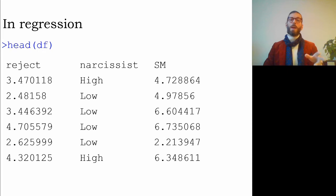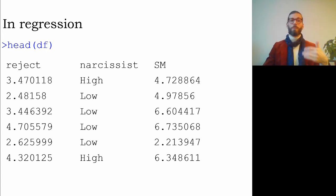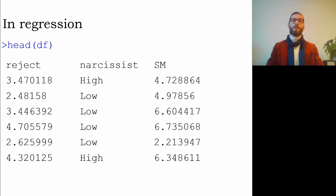Let's look at some of the data to answer the question about narcissism and social media use. The data frame called DF has a variable called rejection representing how strongly rejected participants felt, a factor variable called narcissist with values high or low, and a variable called SM representing how much social media use participants engaged in.